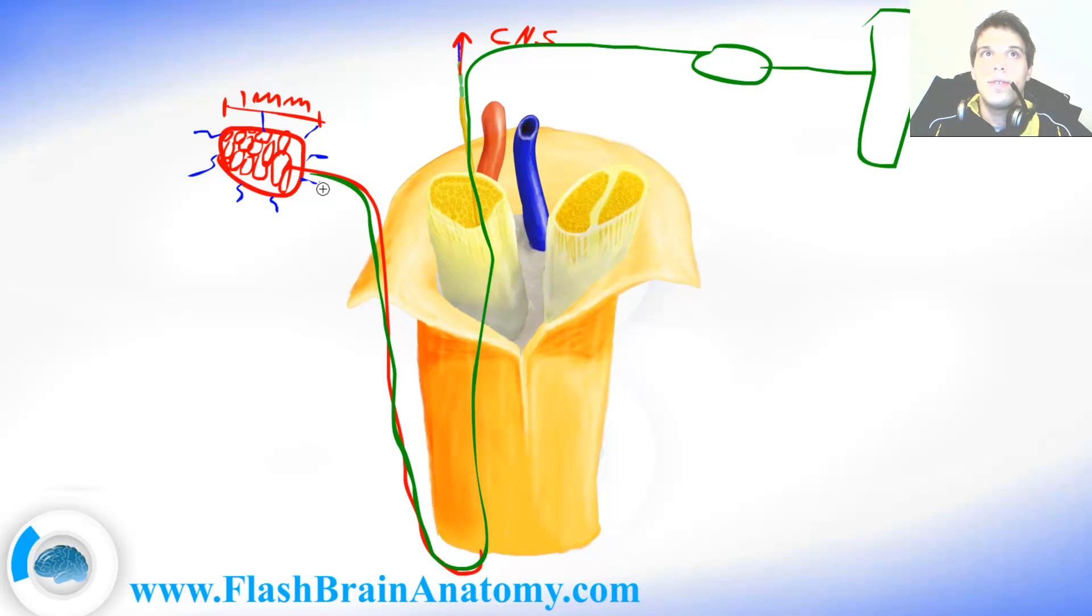In its definition the neurite can never transport the signal towards the cell body because the cell body is here in the spinal ganglion. So according to its function it is a dendrite not an axon.